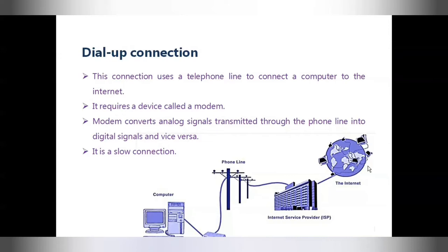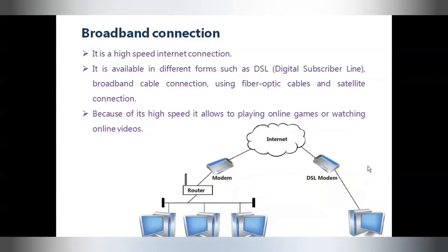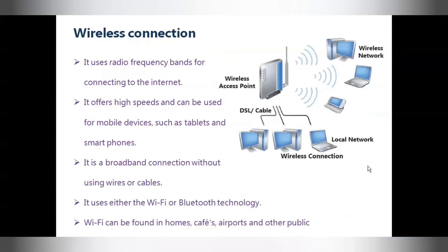Broadband connection is the most used form of internet connection because of its high speed. A broadband connection is available in different forms such as DSL (Digital Subscriber Line), broadband cable connection using fiber optic cables, and satellite connection. A broadband connection allows us to use internet services that require high speed such as playing online games or watching online videos. With broadband connection you can be constantly connected to the internet.